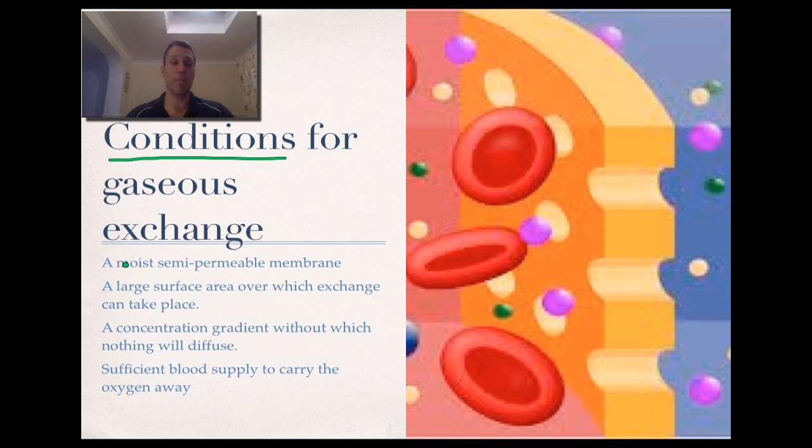So firstly, we've got a moist semipermeable membrane that allows the gas to pass through onto the other side. We've got a larger surface area for this to occur, which obviously makes it more efficient. And then we've got a concentration gradient and a sufficient blood supply to carry the oxygen away. And this concentration gradient during the process of diffusion is what we're going to concentrate on with our more difficult questions.